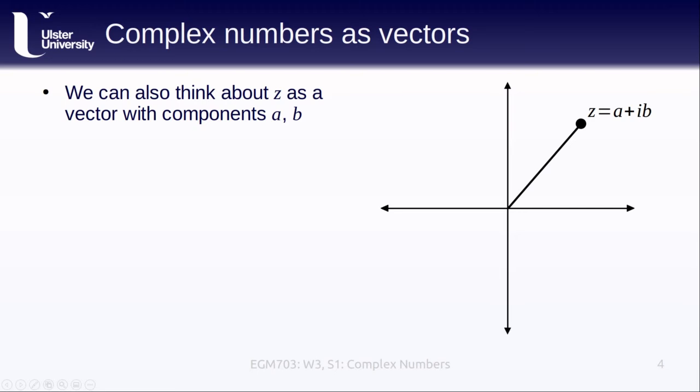We can also think about z as being a vector that has components a and b. The horizontal axis here is known as the real axis because the value on this axis corresponds to the real part of z, while the vertical axis is also known as the imaginary axis because the value on this axis corresponds to the imaginary part of z.